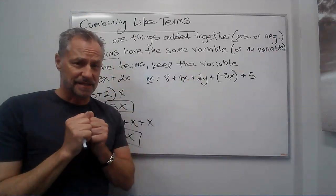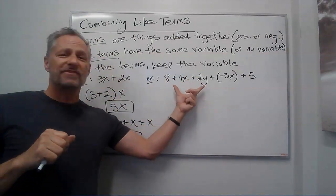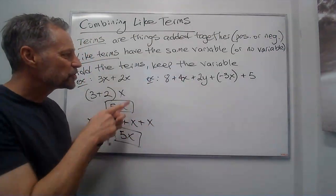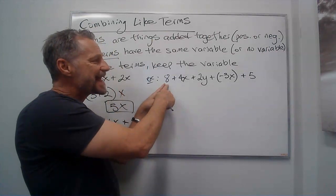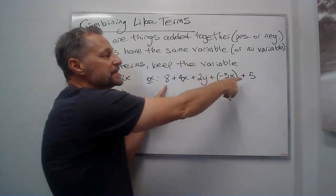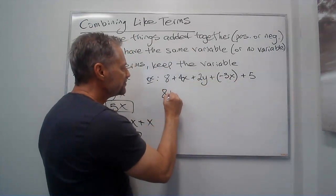Alright so let's look at this example. Now we've got all this stuff going on. Let's see how this works. First I'm going to group them in like terms. So this 8 doesn't have a variable at all, well neither does the 5, so I can put the 8 plus the 5 together.